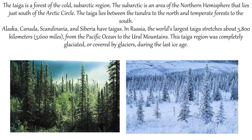The taiga lies between the tundra to the north and temperate forest to the south. Alaska, Canada, Scandinavia and Siberia have taigas. In Russia, the world's largest taiga stretches about 5800 km from the Pacific Ocean to the Ural Mountains. This taiga region was completely glaciated, or covered by glaciers, during the last ice age.